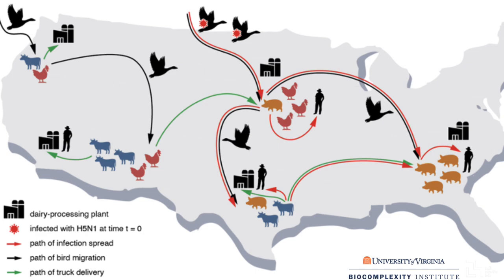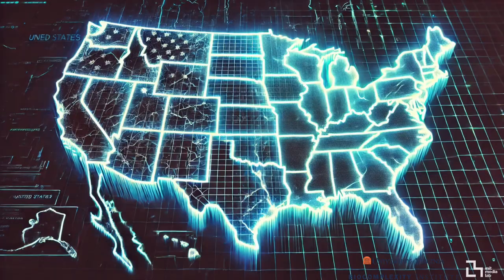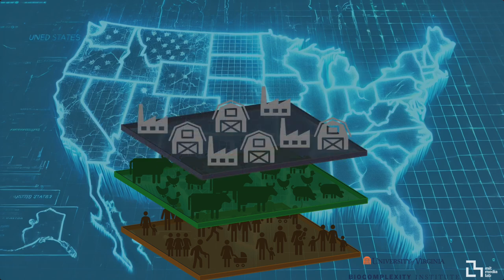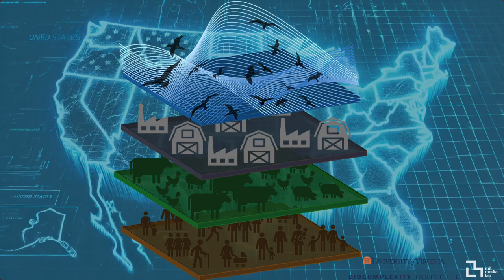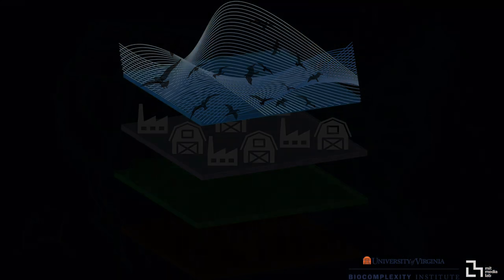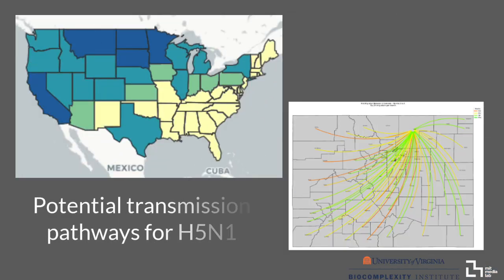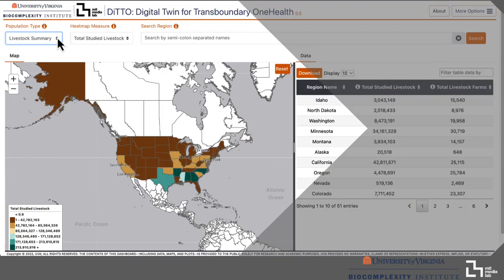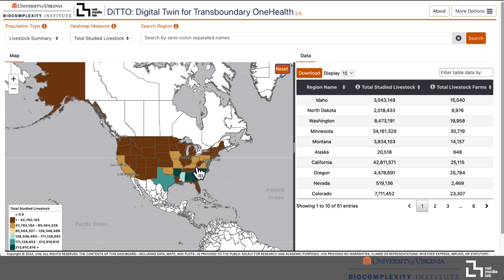While no model can perfectly capture every detail, our high-resolution representation of the U.S. provides a powerful tool. This digital twin includes human populations by size and occupation, livestock operations by type, and migratory bird abundance, all mapped to a grid-level standard. These models have vast applications in biosurveillance, helping us detect disease early, assess risks, monitor outbreaks, and even predict where unreported infections might occur.